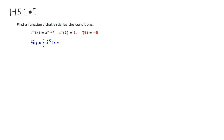This is just the power rule. I'm going to add 1 to the power, so it becomes negative 1 half. Divide by negative 1 half is the same as multiply by negative 2. So I get negative 2, plus some constant — I'll call this C1, because I'm going to need another constant later.